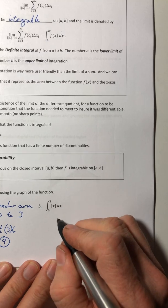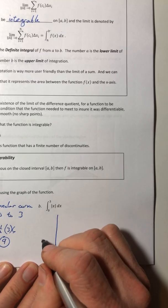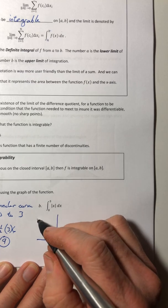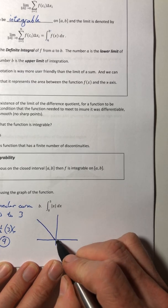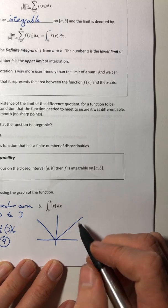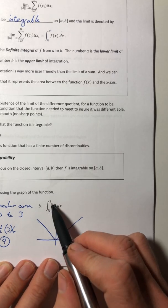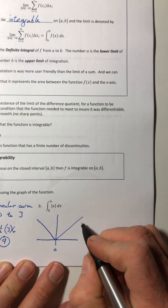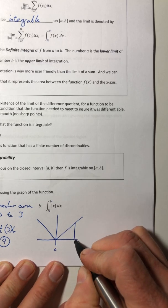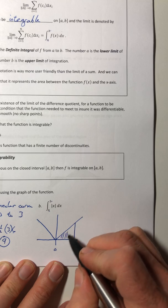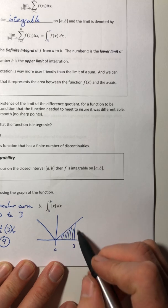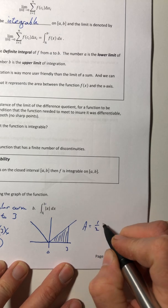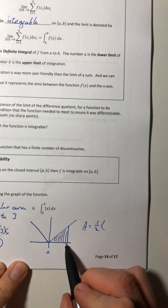Okay, part b, same thing. Let's go ahead and draw it. So the absolute value of x, that's that v. But again, I only want it from zero to three. So I don't have to do this left side, it's just from zero to three. So this triangle right here.